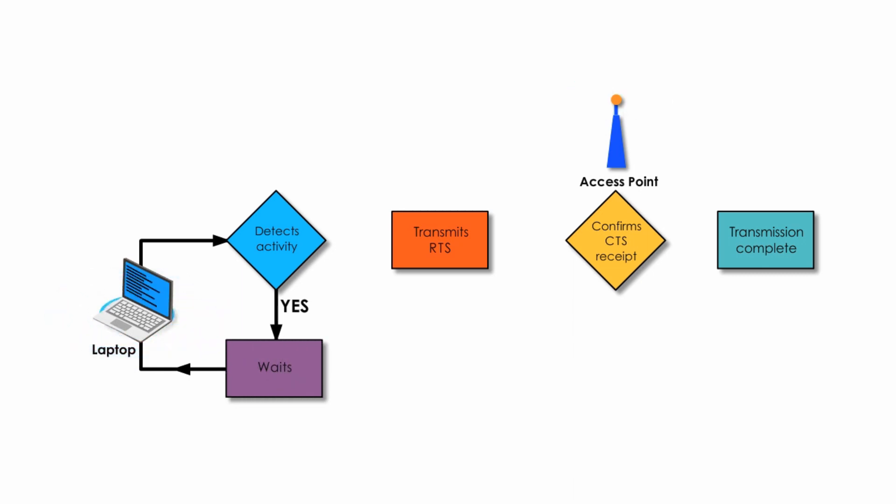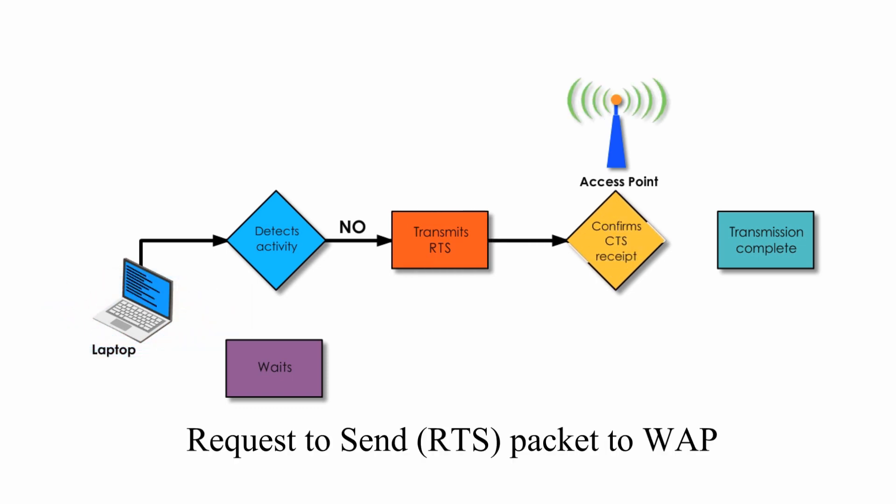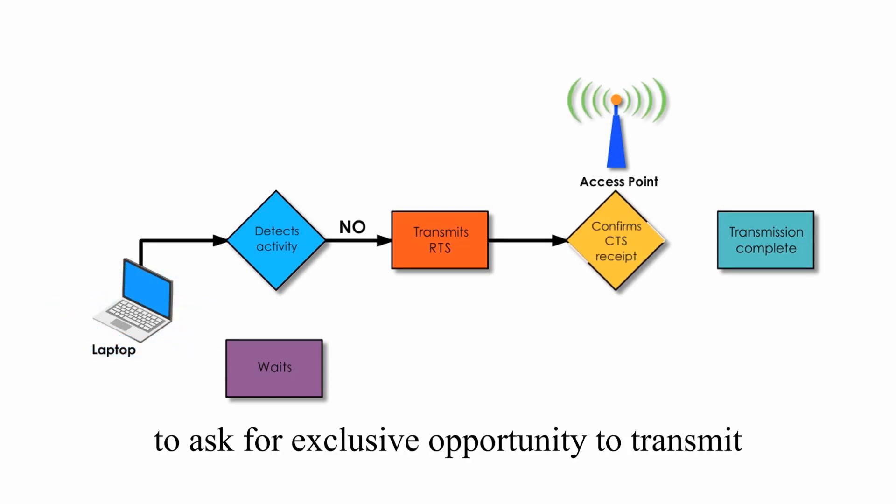Suppose for the second time, my laptop hears the channel is clear. But don't get so excited. It is not yet time to transmit data. Instead, my laptop will only send request to send, or RTS packet, to WAP to ask for exclusive opportunity to transmit.